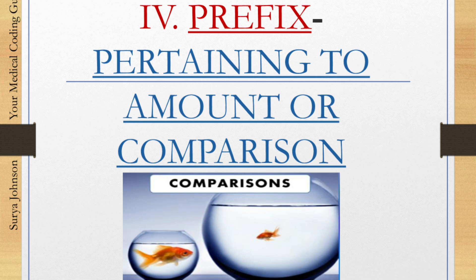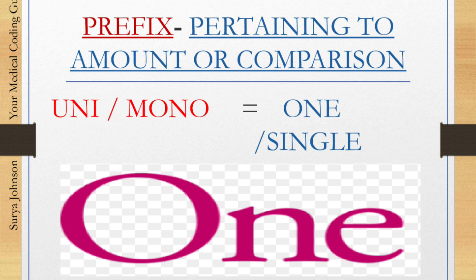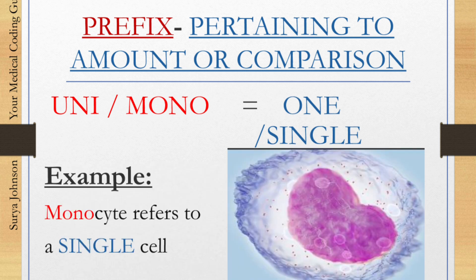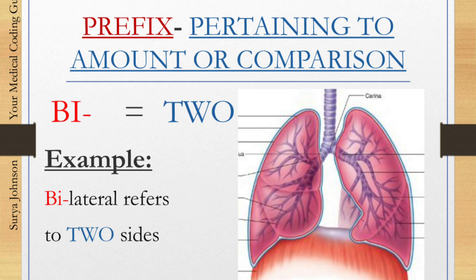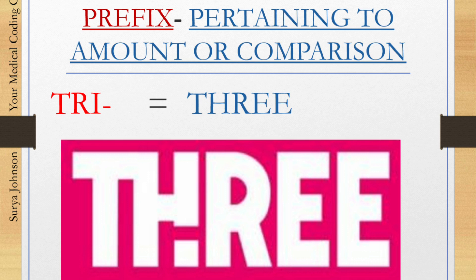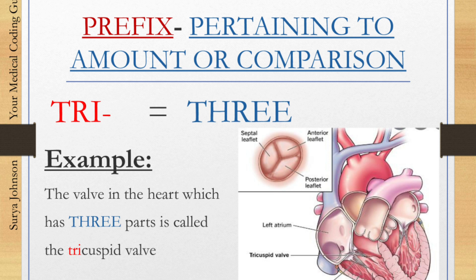Now we'll move on to prefixes pertaining to amount or comparison. First: 'uni' and 'mono' mean one or single. Example: monocyte means single cell. Second: 'bi' is a prefix indicating number two. For example, bilateral means two sides. Number three: the prefix for three is 'tri.' Example: the valve in the heart which has three parts is called the tricuspid valve.